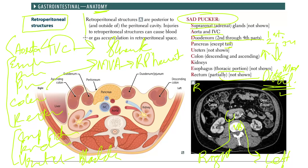Retroperitoneal structures are posterior to the peritoneal cavity. Injuries to retroperitoneal structures can cause blood or gas accumulation in the retroperitoneal space. Blood in the retroperitoneal space is called a retroperitoneal bleed. Blood in the intraperitoneal cavity is called hemoperitoneum, and gas in the intraperitoneal cavity is called pneumoperitoneum.